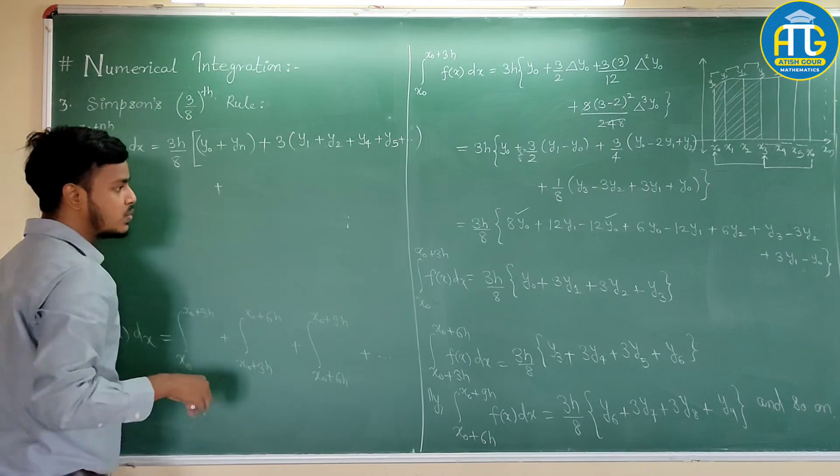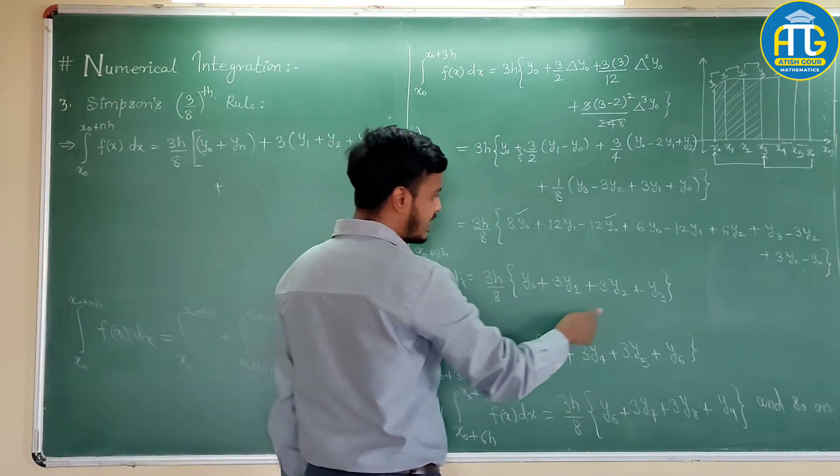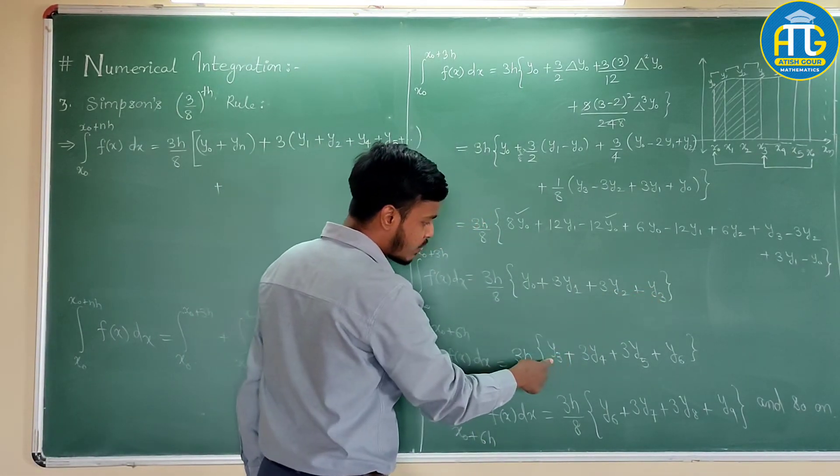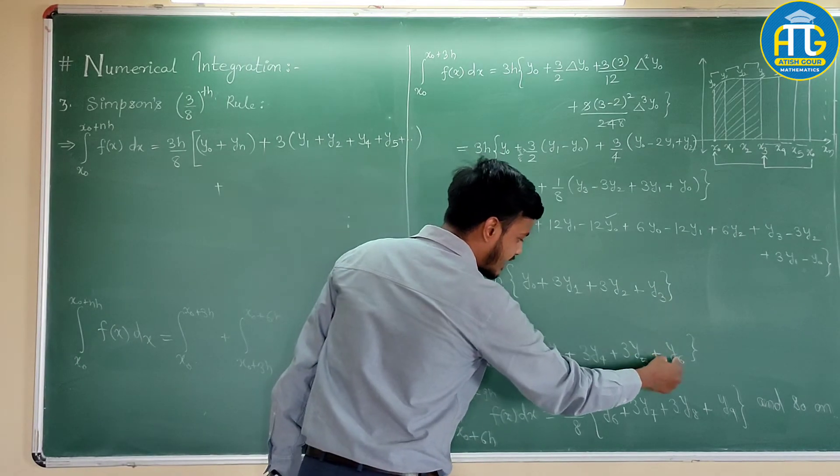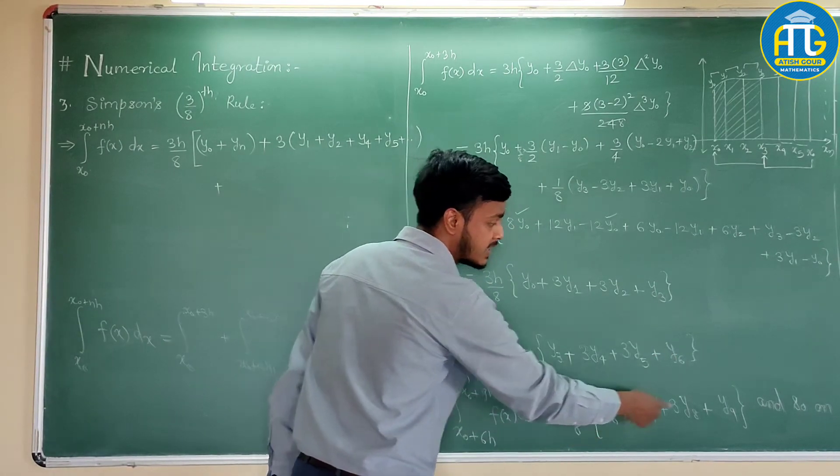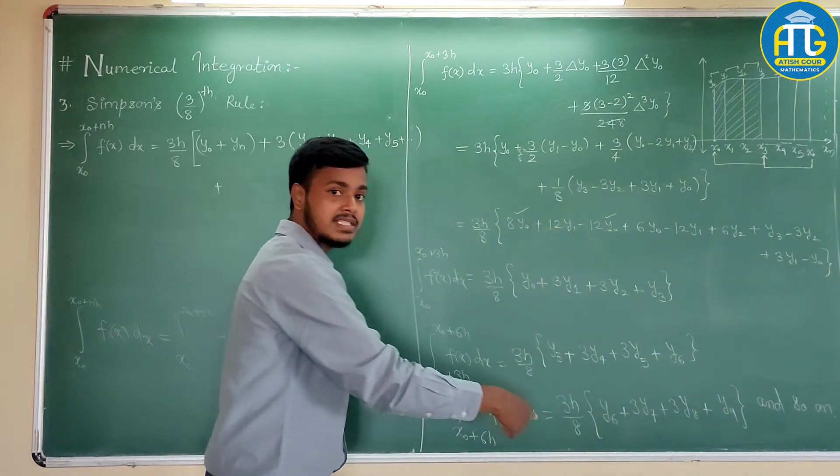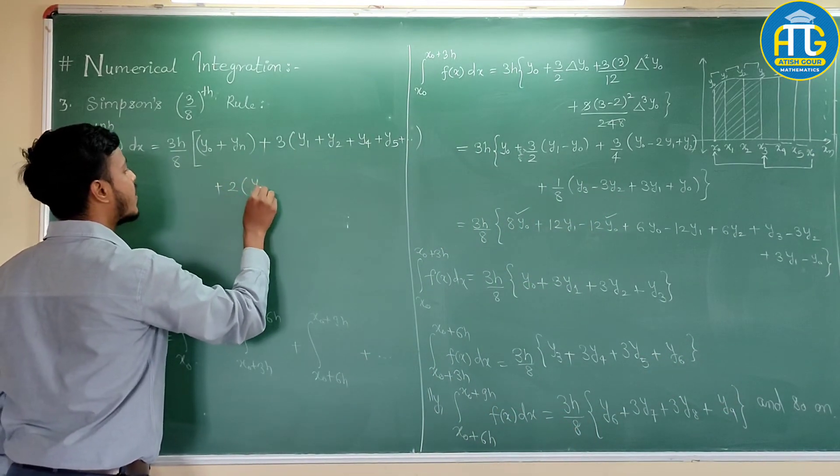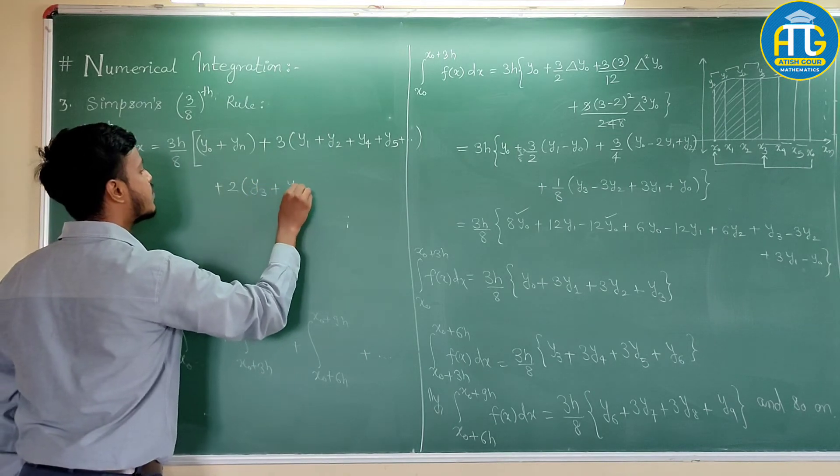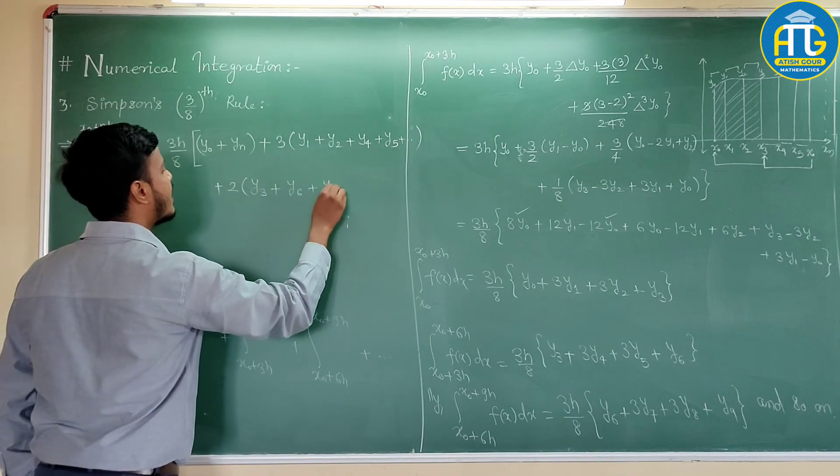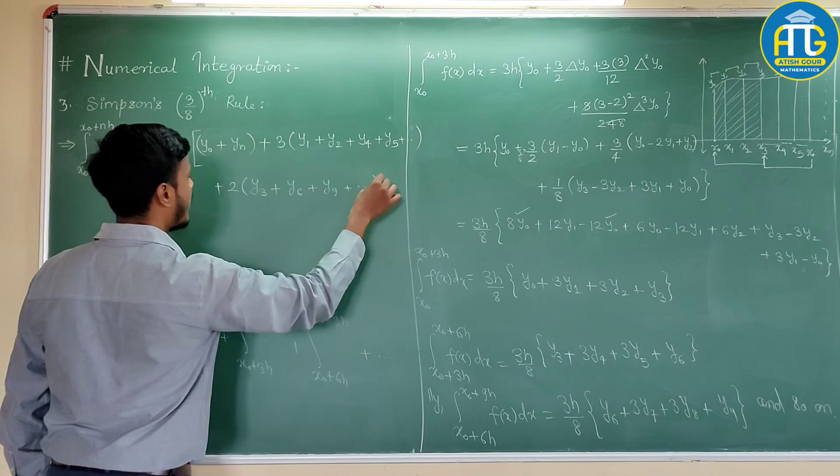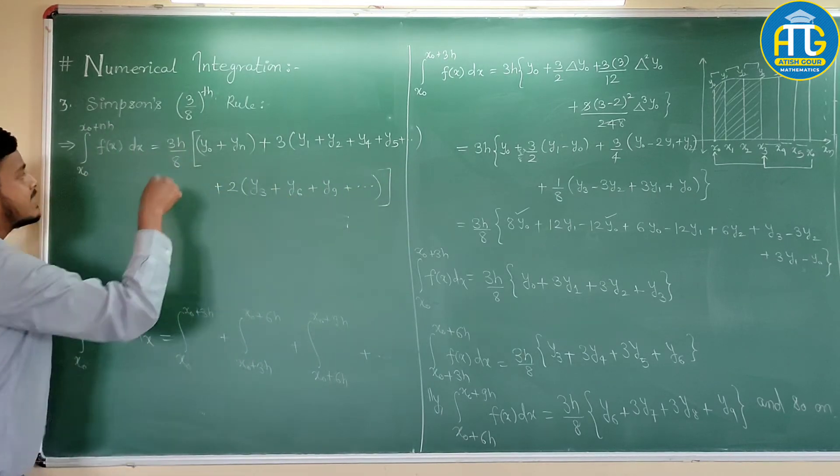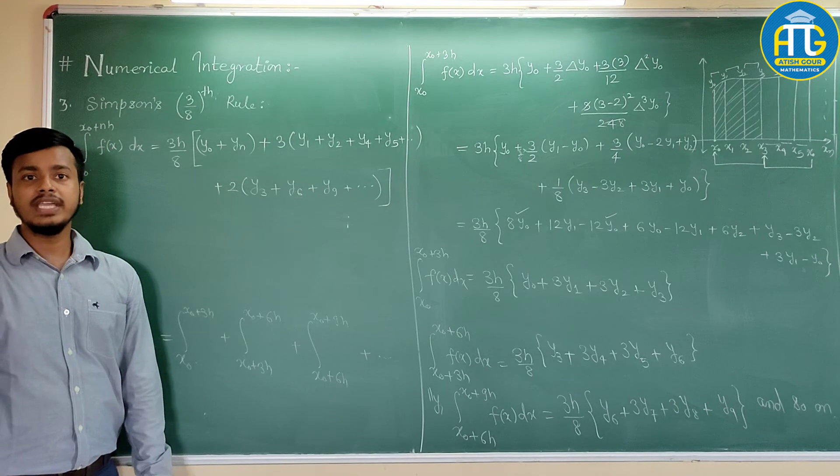And you see the 2 times terms, here it is y3, here it is y6, here it is y6, 2 times, here it is y9, in the next one you will get y9. So, this is 2 times (y3 plus y6 plus y9 plus and so on). This is nothing but the Simpson's 3/8 rule.